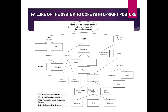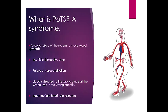Where does POTS fit in? This is a rather old slide of the group of orthostatic intolerance syndromes — a problem where blood essentially doesn't get pumped properly from your legs to your heart to your brain. On the right are the very serious autonomic failure conditions that autonomic neurologists deal with; on the left are the fainting conditions that dominate syncope clinics and casualty. POTS sits in the middle: a milder form of dysregulation of the autonomic nervous system.